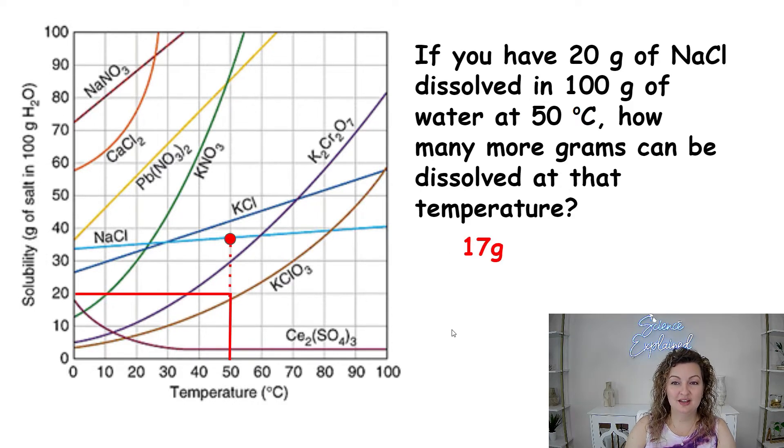All right, let's check it out. So we are looking for NaCl, which is this baby blue line right here. Remember the 100 grams of water is referring to our graph. So we can skip over that number. We're not looking for it. We are going to be looking for 50 degrees. Here's 50 degrees. We go straight on up to 20 grams. Here's 20 grams. That is referring to our question. So this is kind of where our stopping point is going to be, but it asks us how many more grams can be dissolved at that temperature.